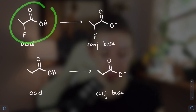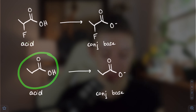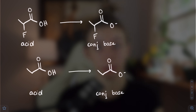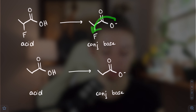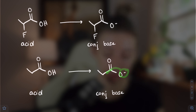So if we're comparing this acid to this acid, the one with the fluorine on it is going to be more stable because inductive effects mean that the resultant negative charge is going to be spread out more across the molecule than if the fluorine wasn't there. So this one would be more acidic than this one.